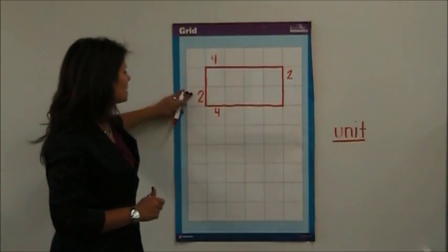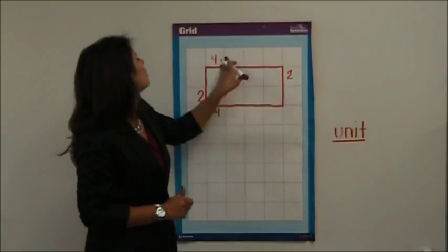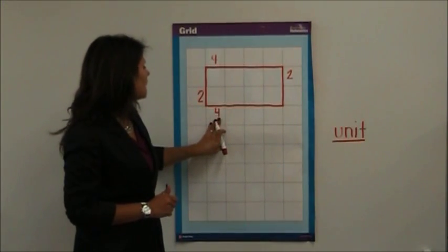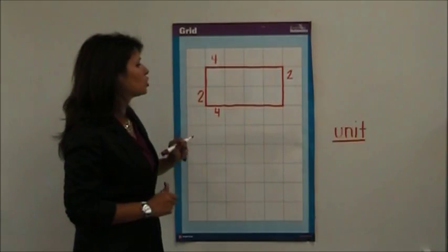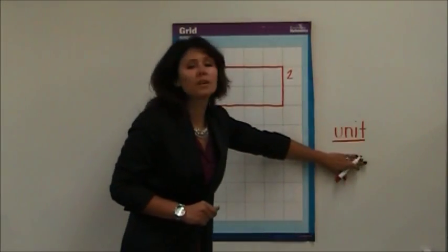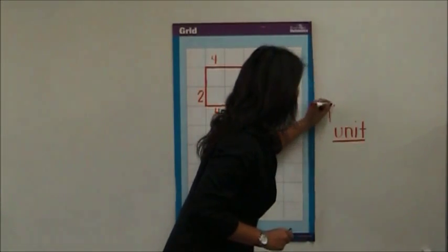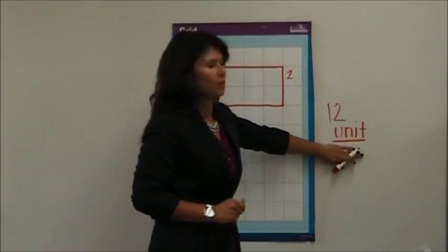I would then add all these distances together. 4 plus 2 is 6, plus 4 is 10, plus 2 is 12. It's very important to make sure you put the unit. So my answer would be 12 and it must include a unit.